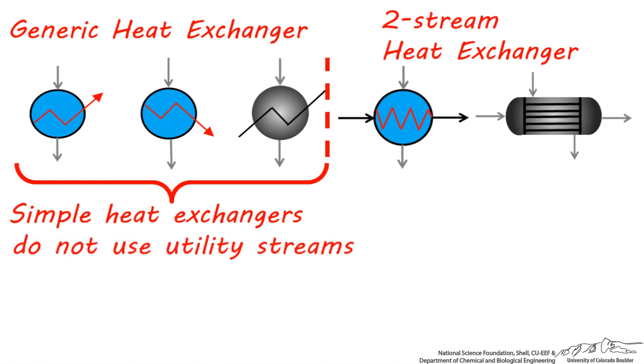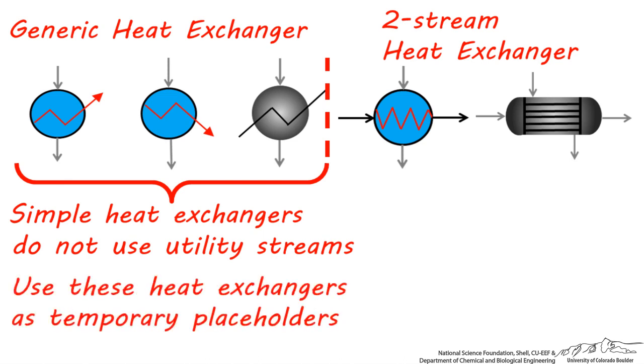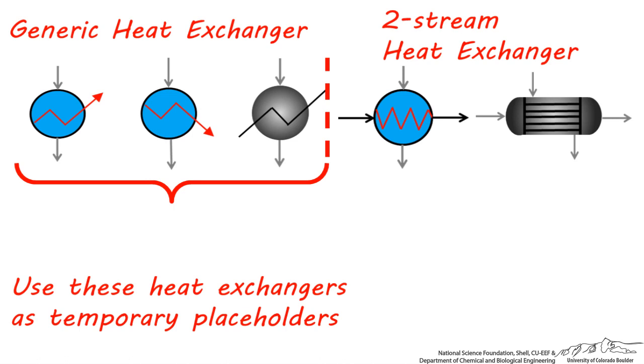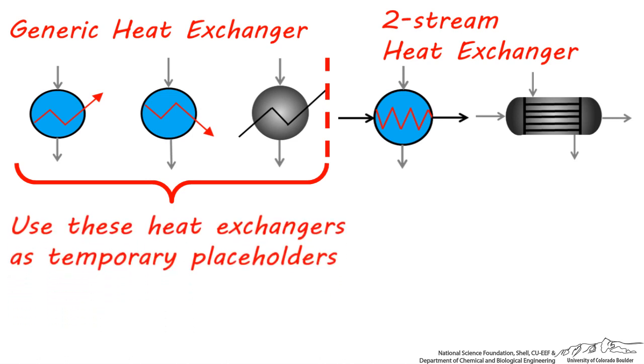For this reason, you don't connect any utility streams to them. For this type of heat exchanger, there's no way to specify which utility stream you'd like to use, its temperature, or flow rate. The purpose of this type of heat exchanger in ChemCAD or Aspen is really just as a placeholder. I suggest you use these generic heat exchangers carefully.